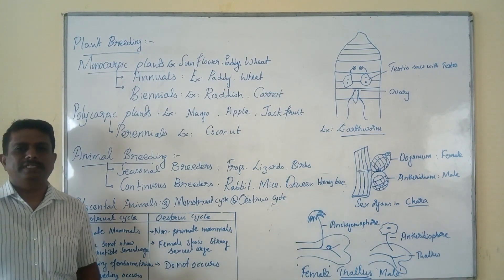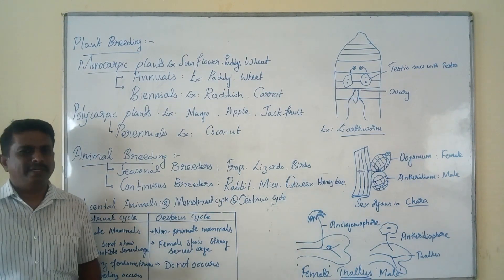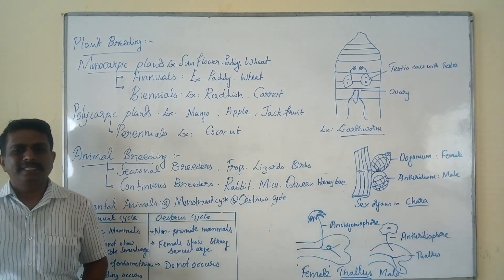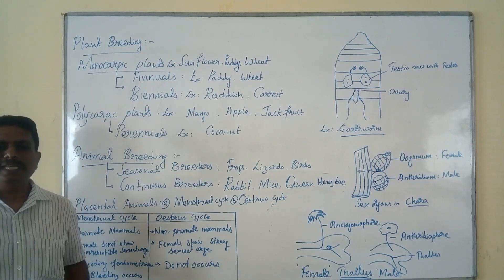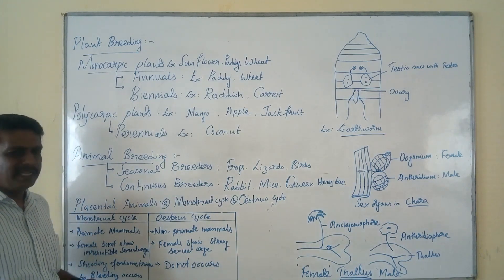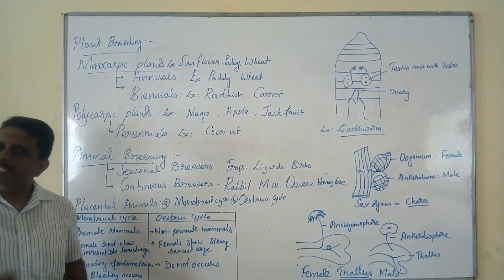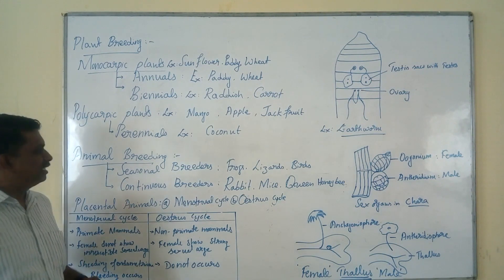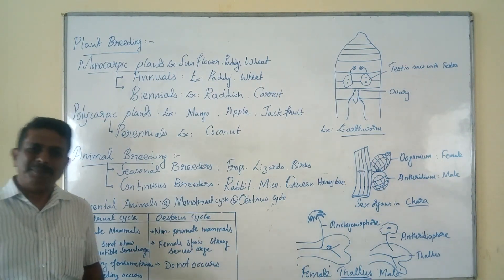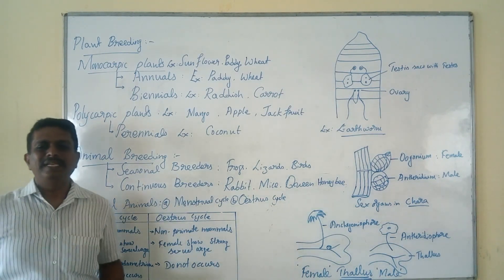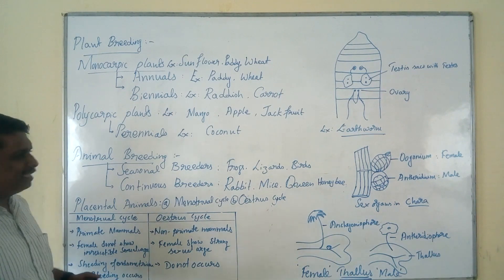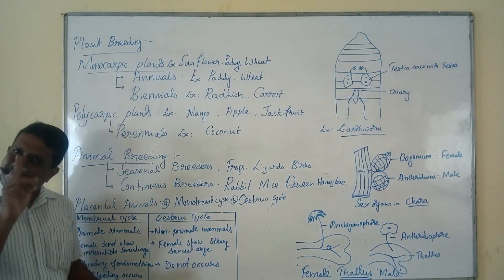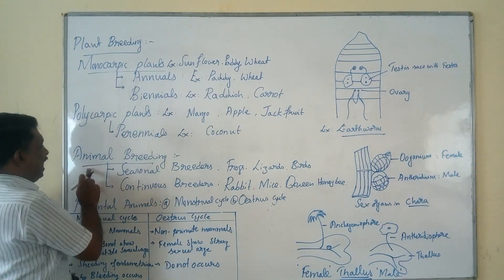Hello students. Today we shall discuss the main important features of plant breeding and animal breeding. With reference to the last class, we studied some of the important features in the phases of the life cycle. For study convenience, the life cycle in living organisms is divided into three important types: namely the juvenile or vegetative phase, the maturity or reproductive phase, and the senescence or aging phase.